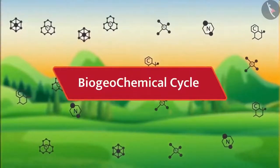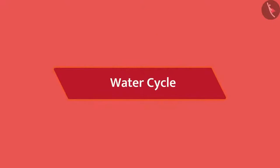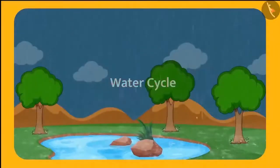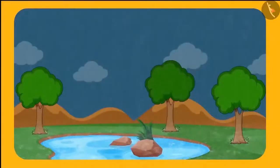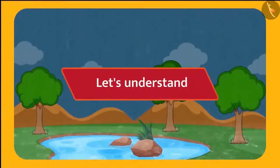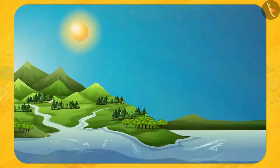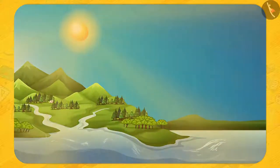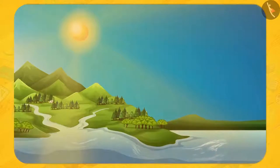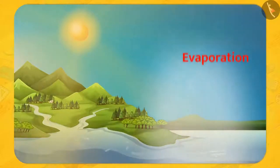First, the water cycle. Friends, we all like rain. But how does rain occur? Let's understand. Due to sunlight, the surface of water bodies gets heated up and gets converted to water vapour. This process is called evaporation.